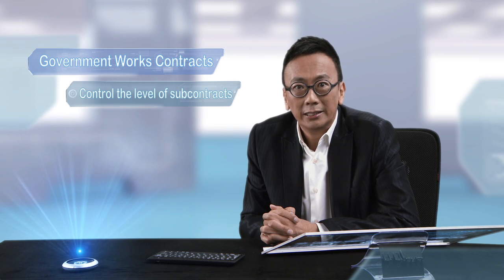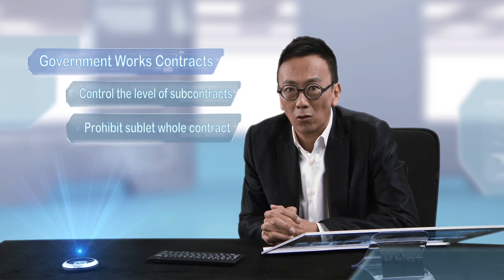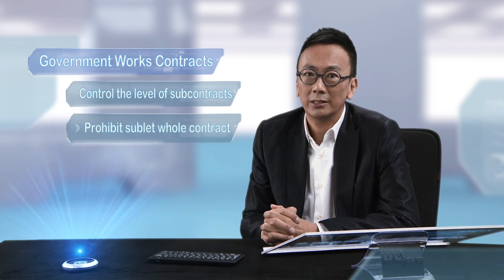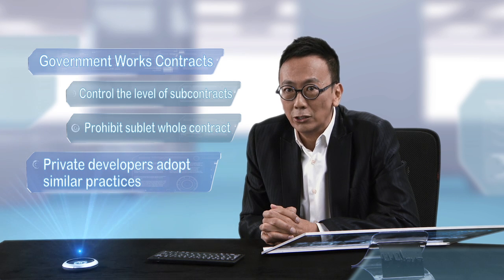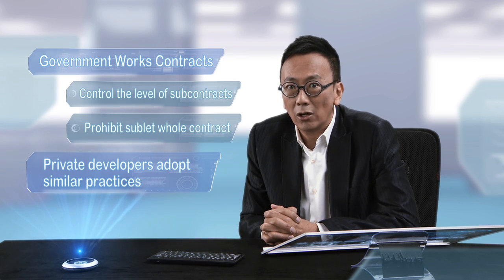We can see from the clip that with too many layers of subcontracting, the margin for the subcontractor is too low, forcing him to cut corners on fire services engineering and use substandard doors. To minimise the corruption risk of multi-layer subcontracting, the government has stipulated in its works contracts to control the layers and prohibit subcontracting of works to another company in whole. Private developers can also follow the practice adopted in public works contracts for better risk management.